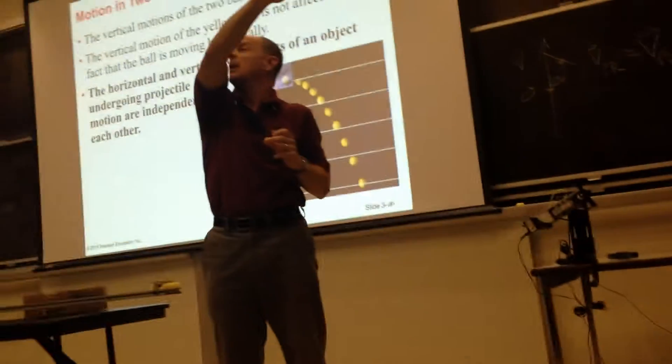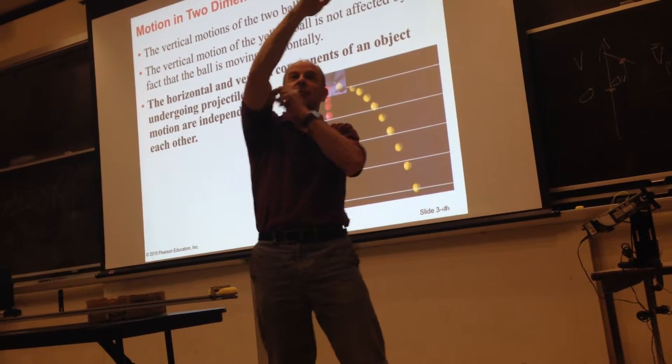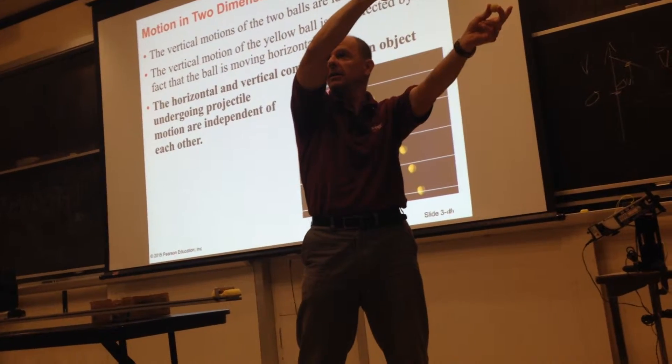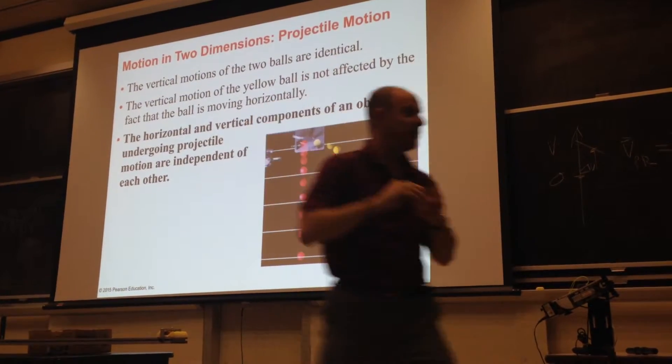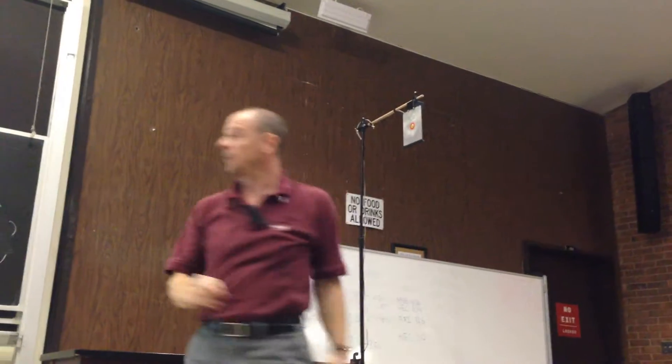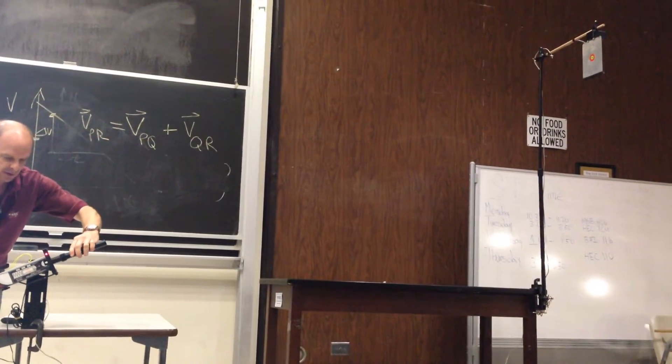away from the straight line that would follow if there were no gravity. And its deviation from that straight line, in other words, its vertical motion due to gravity, is exactly the same as the vertical motion of this due to gravity, so it still ends up hitting the target.